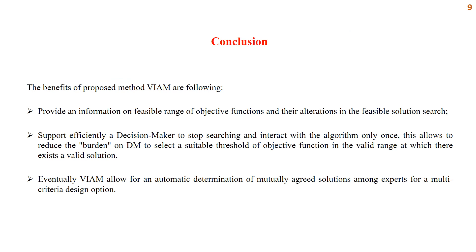In the last slide, we made the following conclusions. The benefits of the proposed method VIAM are: it provides information on the feasible range of objective functions and alterations in the feasible solution search; VIAM effectively supports a decision-maker to stop searching and interact with the algorithm only once; this allows reducing the burden on the DM to select a suitable threshold of the objective function in the valid range at which there exists a feasible solution; and VIAM allows for the automatic determination of mutually-agreed solutions among experts for a multi-criteria design problem.